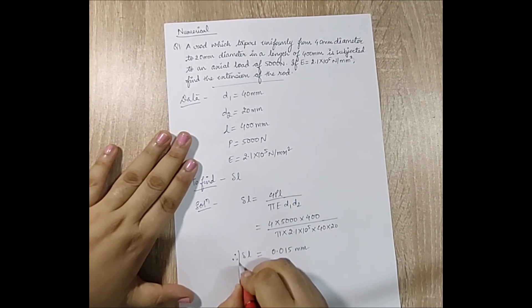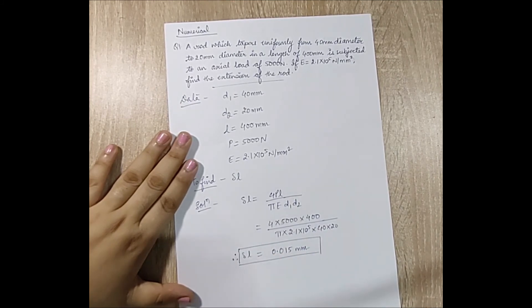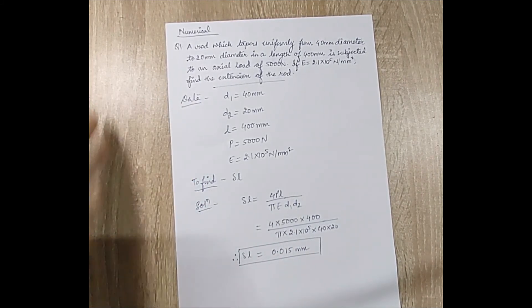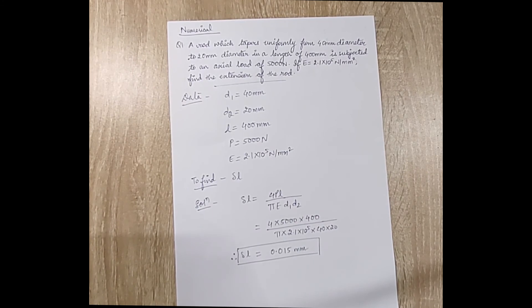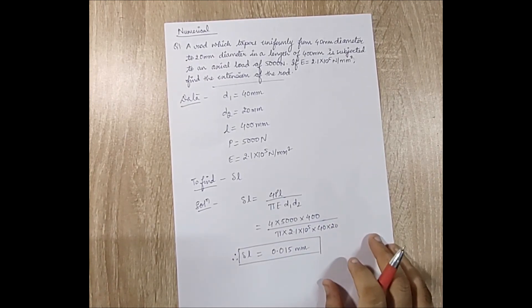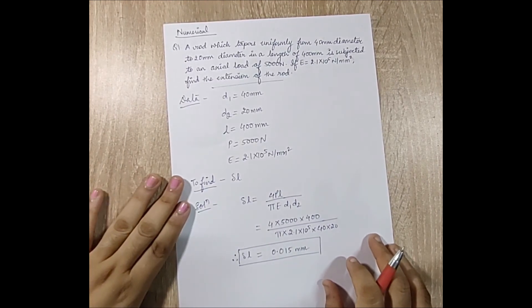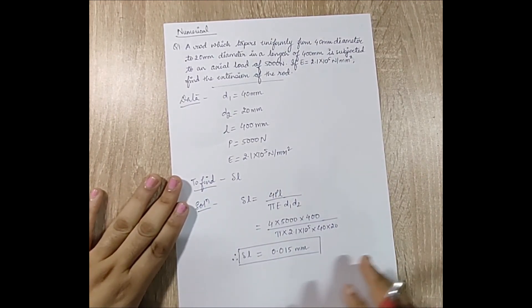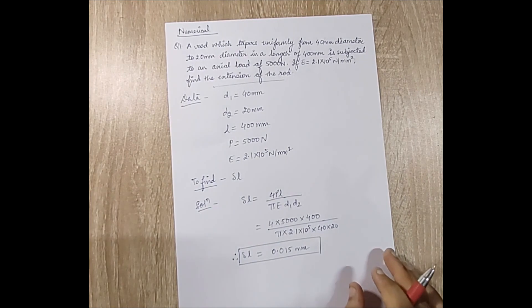I hope you have understood the derivation and the numerical. If you have any doubts or want me to solve any numerical, write in the comment section. Don't forget to like, share, and subscribe, and hit the bell icon for updates. I'll see you in the next session for the second part — the tapered bar with rectangular cross section.